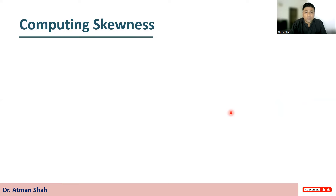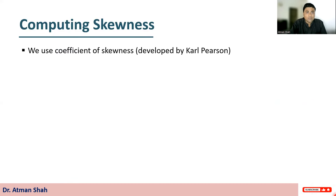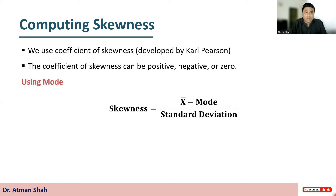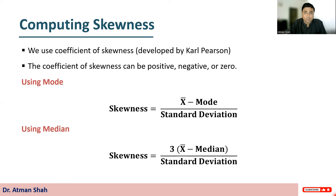Now, how to compute skewness? We use two methods. The first uses mode: skewness = (x̄ − mode) / standard deviation. If the value is greater than zero, it is positively skewed; if less than zero, it is negatively skewed. The second uses median: skewness = 3(x̄ − median) / standard deviation. Again, if the value is greater than zero it is positively skewed, and if less than zero it is negatively skewed.